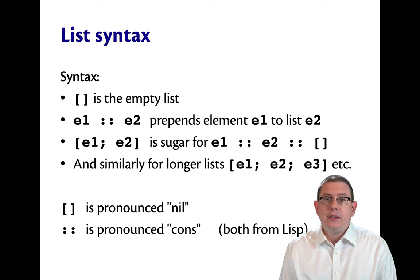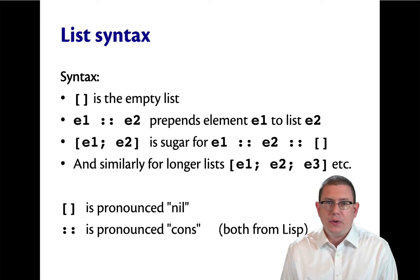written with square brackets. This is pronounced nil. It's a name that comes from Lisp, the grandmother or grandfather of all functional languages.